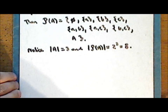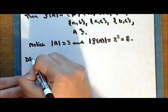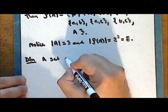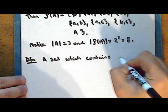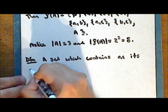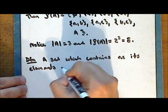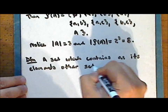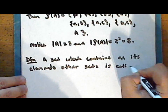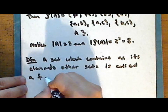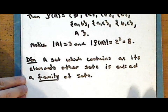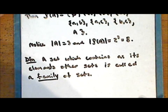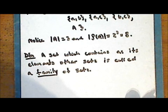A set which contains as its elements other sets is called a family of sets. Notice that the power set is an example of a family of sets, since it does contain as its elements the subsets of a given set.